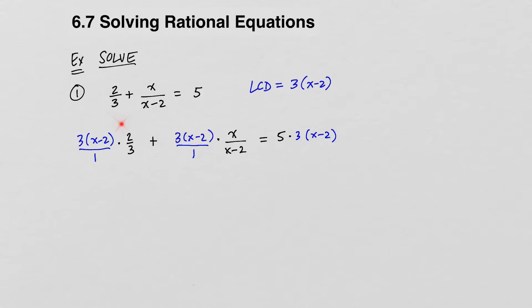In the first expression, we can cancel the 3 here with the 3 here. In the second expression, we can cancel the x minus 2 with the x minus 2. On the other side of the equation, there's nothing to cancel, and that's okay — we're just going to end up multiplying 5 times 3. So now we multiply what we have left over: in the first part we have 2 times the quantity x minus 2, then 3 times x, and on the other side we have 15 times x minus 2.